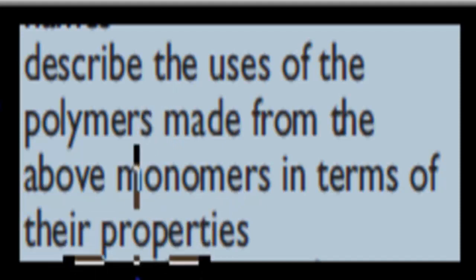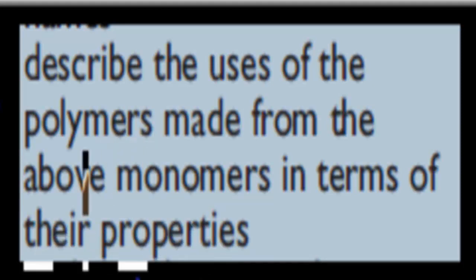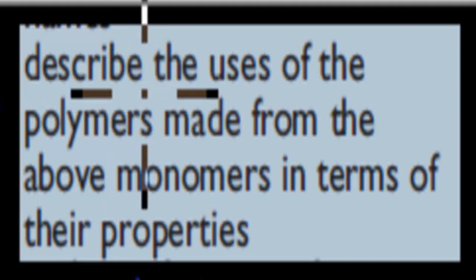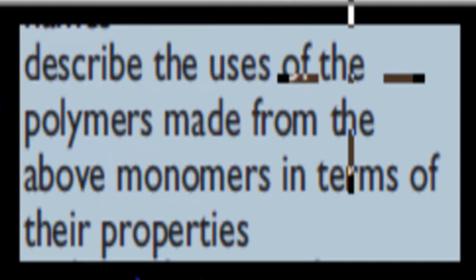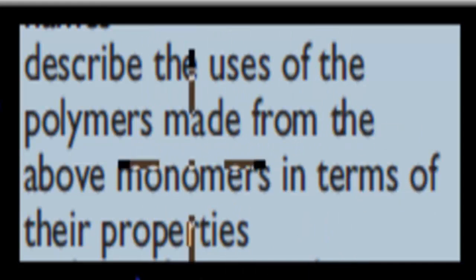Welcome back. In the last video, we talked about a computer simulation of the polymerization process. In this video, we're going to cover the next dot point, which is all about properties of different polymers and what those properties lead to in terms of how we can use them. The dot point says: describe the uses of the polymers made from the above monomers in terms of their properties.